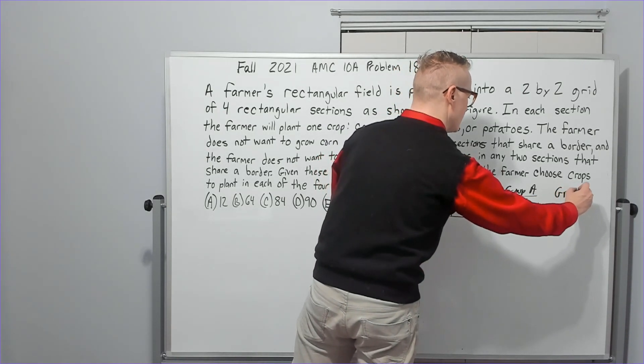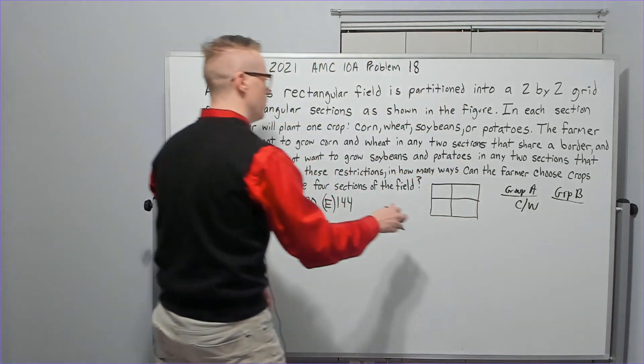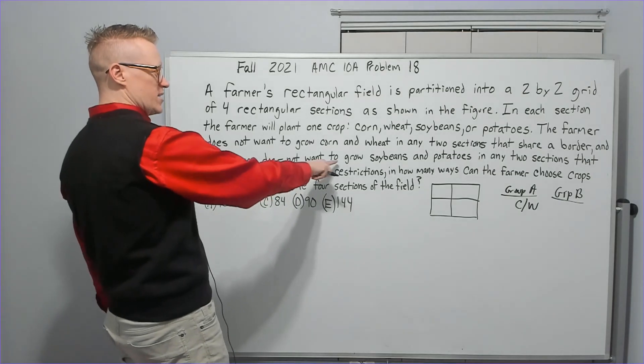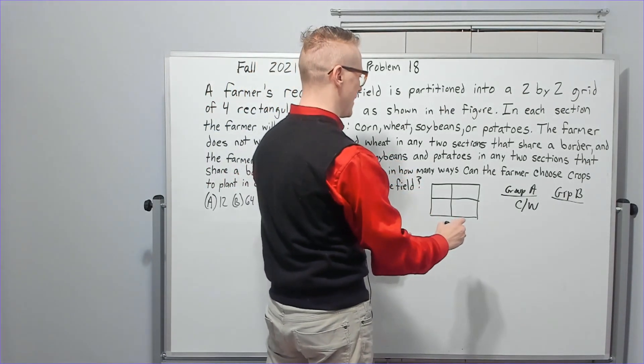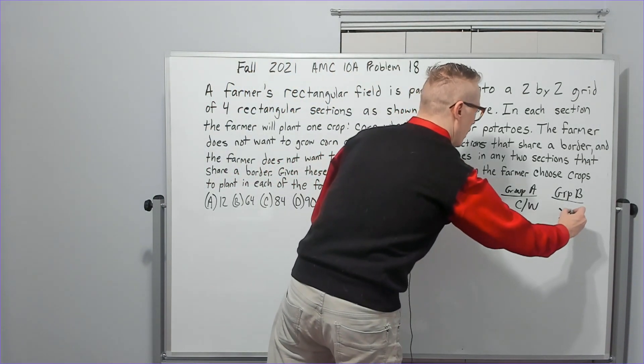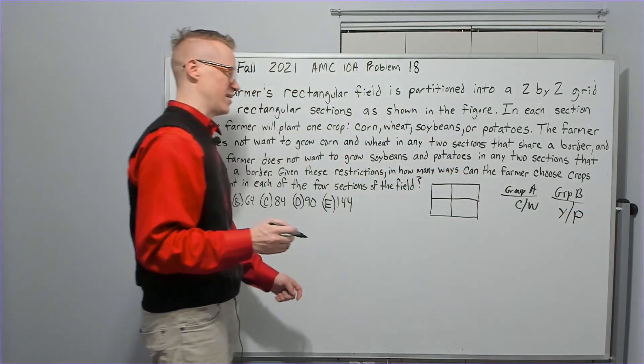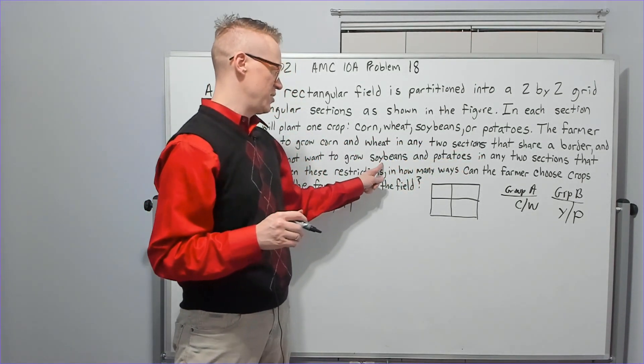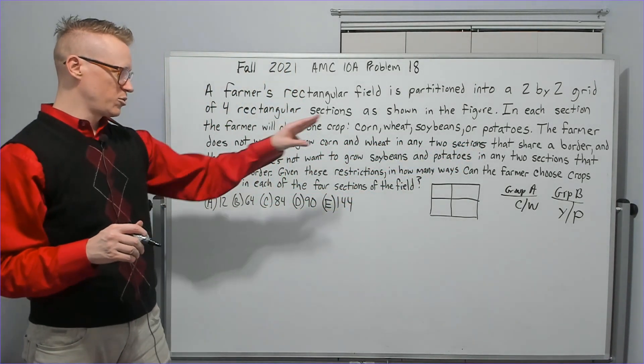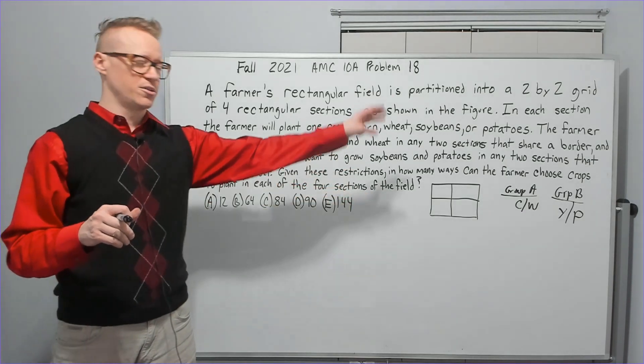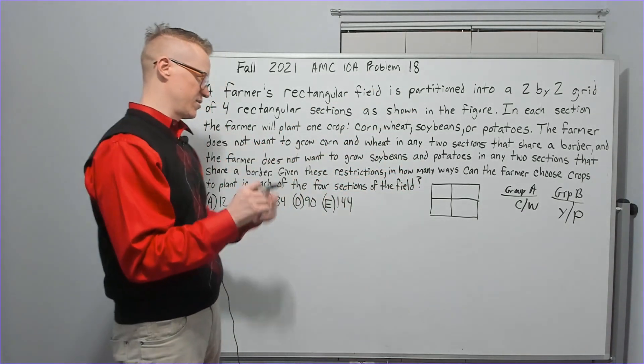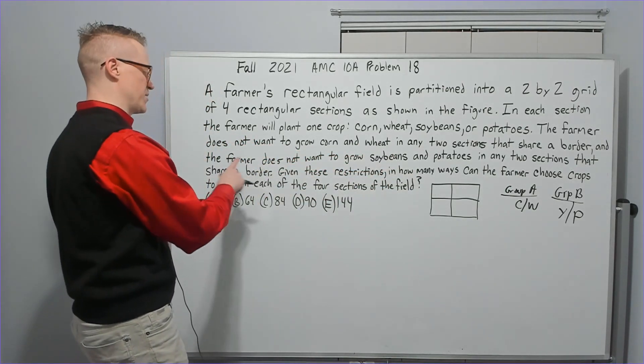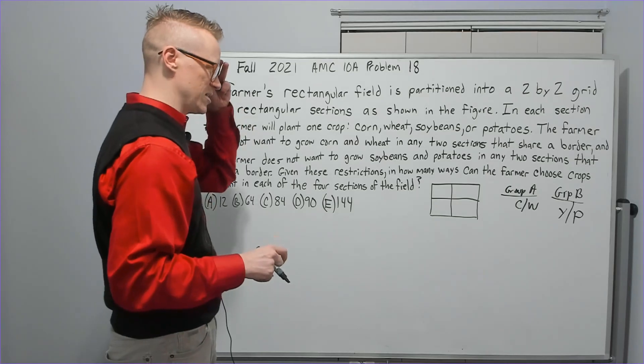And then Group B. It says also, the farmer does not want to grow soybeans and potatoes. I'm going to call soybeans Y and potatoes P. Again, I hate the letter S for variables. In any two sections that share a border. So Group A cannot share a border. Group B cannot share a border. Given these restrictions, in how many ways can the farmer choose crops to plant in each of the four sections of the field?